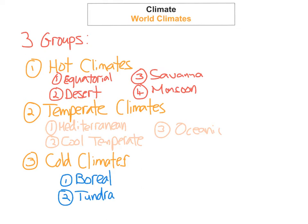For your Junior Certificate examination we're going to look at the four hot climates, the three temperate climates, and the two cold climates. You need to know all of the different climates, but for the long questions you need to know one from each type in great detail. For example, you might learn the hot desert for hot climates, cool temperate for temperate, and boreal for cold climates. You need to know them all because you can be asked a short question or part of a long question on any of the climates, but usually you just need to know one in detail for the longer questions.